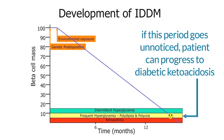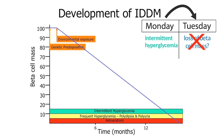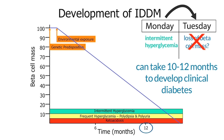If this period goes unnoticed, the patient can progress to diabetic ketoacidosis. Interestingly, not all patients have a clear history of two or three weeks of polydipsia and polyuria before they present with ketoacidosis. Rather, they're basically fine on Monday and then on Tuesday they're in extremis, quite ill. If we go back and look at a patient in the green zone on Monday, what changes between Monday and Tuesday? It's not that they lose a massive amount of beta cell function overnight — we know it takes 10 to 12 months to develop clinical diabetes. So what much more likely happens is that they encounter stress.